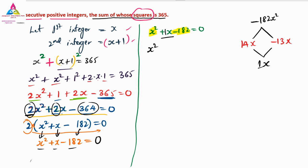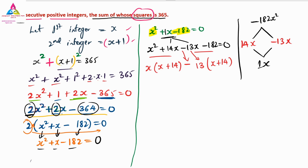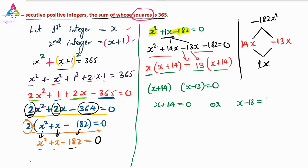So X squared plus 14X minus 13X minus 182 equals 0. Grouping: X(X plus 14) minus 13(X plus 14) equals 0. Taking (X plus 14) common: (X plus 14)(X minus 13) equals 0. Therefore X plus 14 equals 0 or X minus 13 equals 0.